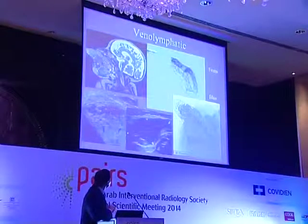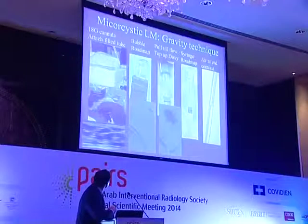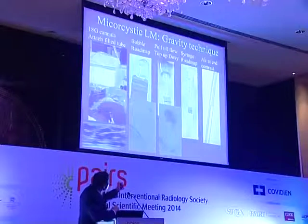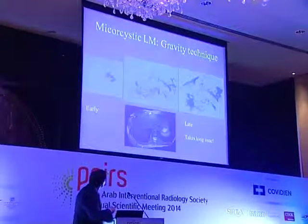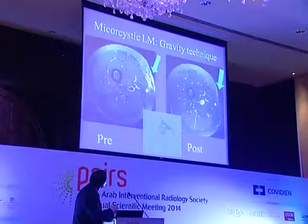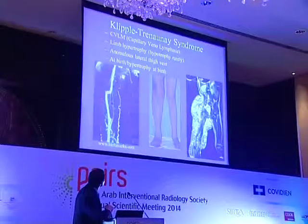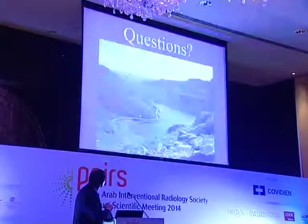The gravity technique is important for microcystic lymphatic malformation: insert an ultrasound-guided needle, create a crescent under fluoroscopy, allow the agent to flow in, pull back until flow is confirmed, and monitor with a roadmap. Venous and lymphatic malformations can occur in combination. Klippel-Trénaunay syndrome is a combination of capillary malformation, limb hypertrophy, and anomalous lateral marginal vein — there is not enough time to discuss it in detail.